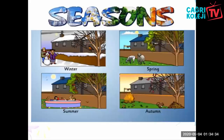Seasons. We have four seasons: winter, spring, summer, and autumn. Autumn has another name — fall. When you go to America, people in the USA call it fall. When you go to Britain, people in England say autumn.